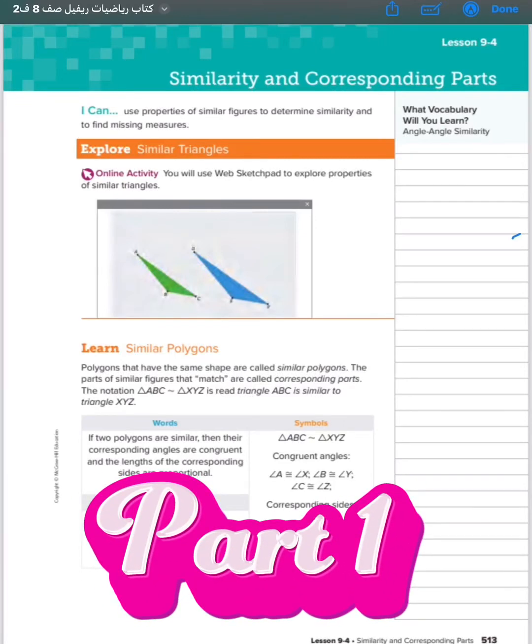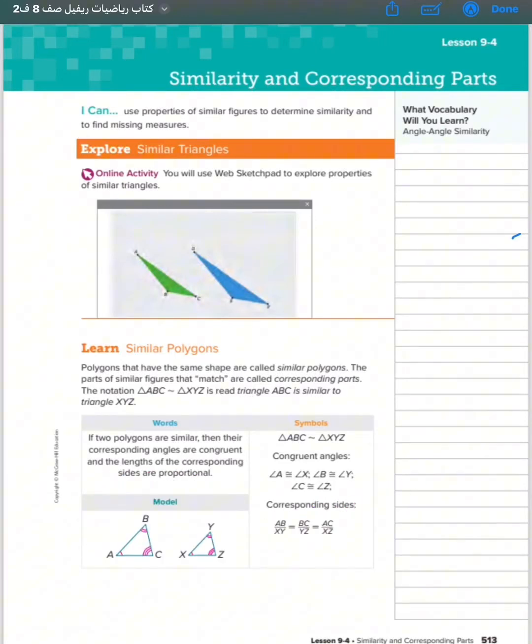أعوذ بالله من الشيطان الرجيم بسم الله الرحمن الرحيم والصلاة والسلام على رسول الله اللهم سهل ما جعل الحزن إذا شئت سهلا. Lesson 9.4 Similarity and corresponding parts. In this lesson you can use properties of similar polygons to determine similarity and to find missing measures.